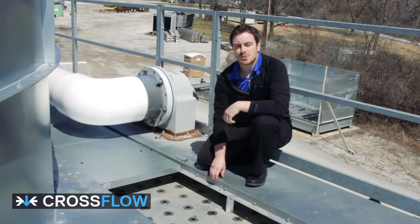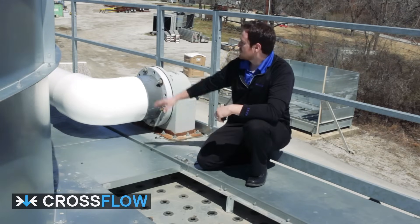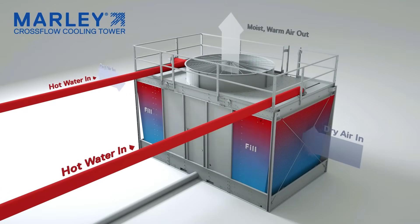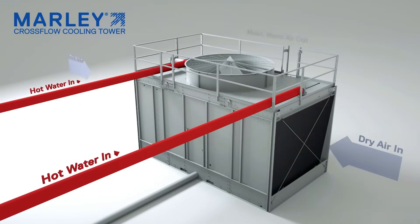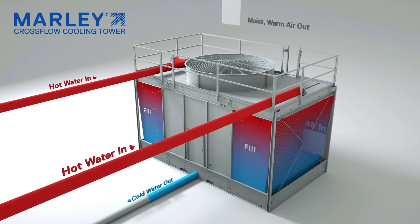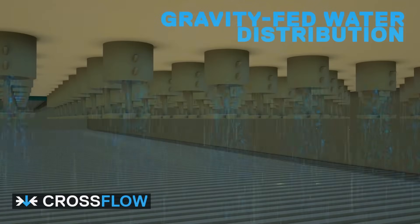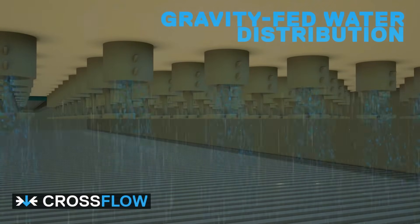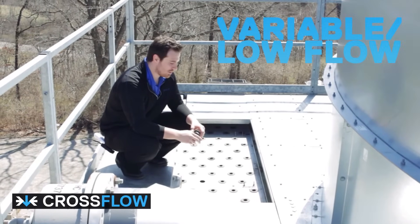Another fundamental difference between cross flow and counter flow cooling towers is the water distribution system. On a cross flow cooling tower like the one we're standing on top of right now, the process water or condenser water is piped up to the top of the tower, goes through what we call an HC valve or flow control valve, and then distributes into what we call the hot water distribution basin. The hot water distribution basin on a cross flow tower is gravity fed, meaning the only driving force behind the nozzles is the hydrostatic head of water above the nozzle. One of the benefits of a gravity fed distribution basin is the ability to handle variable flow or low flow applications.